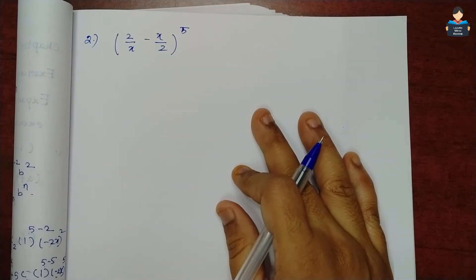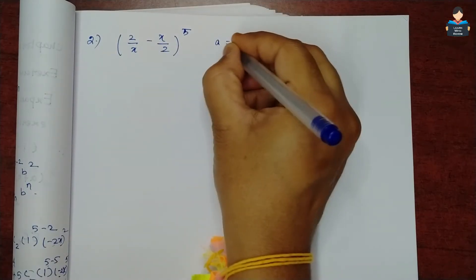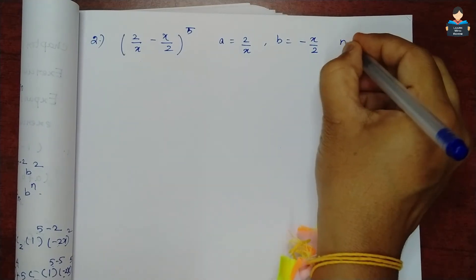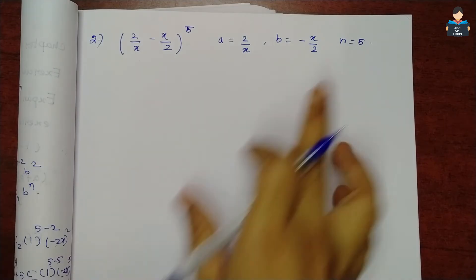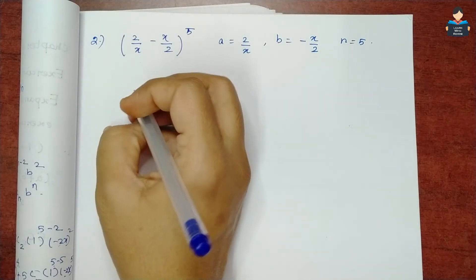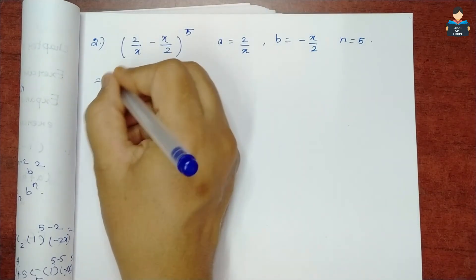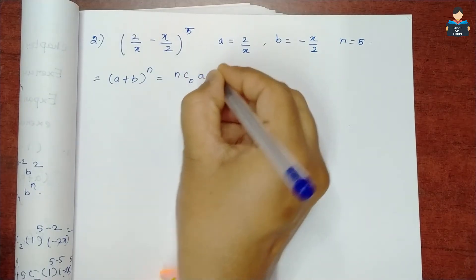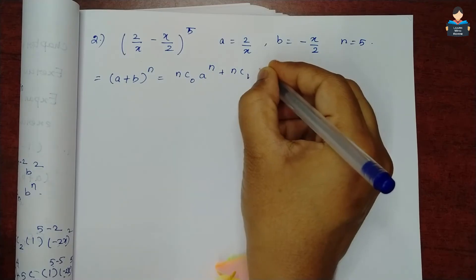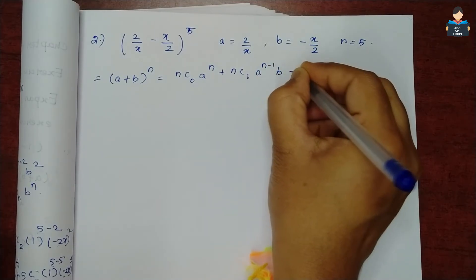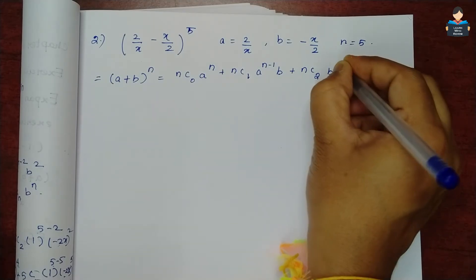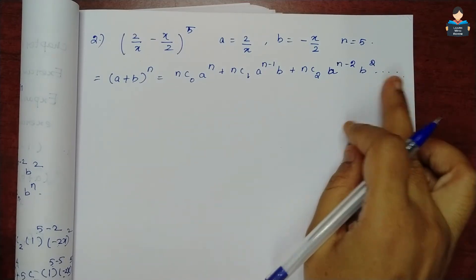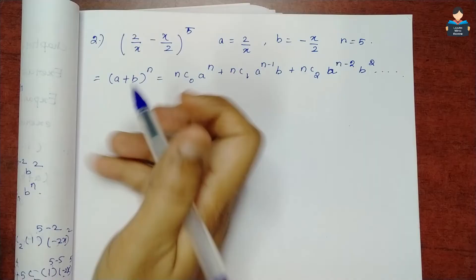Second problem: expand (2/x - x/2)^5 with n=5. We again use the binomial theorem formula: (a+b)^n = nC0·a^n + nC1·a^(n-1)·b + nC2·a^(n-2)·b^2 + ...